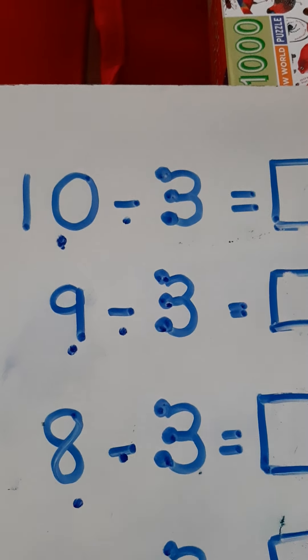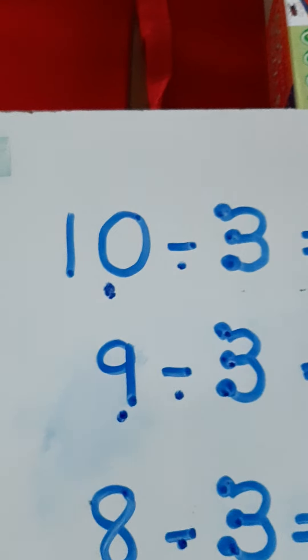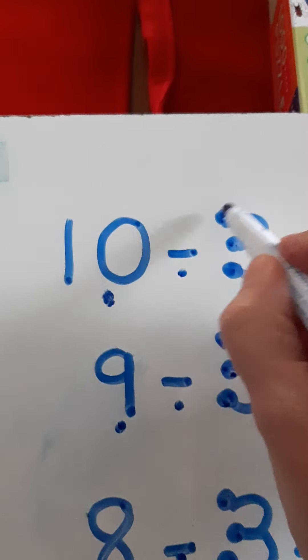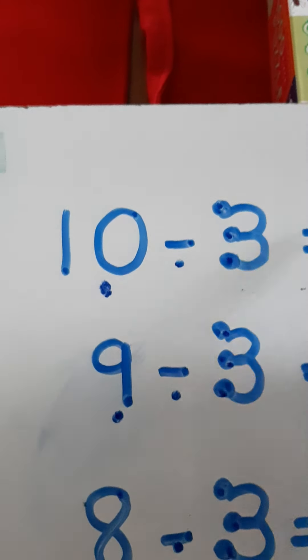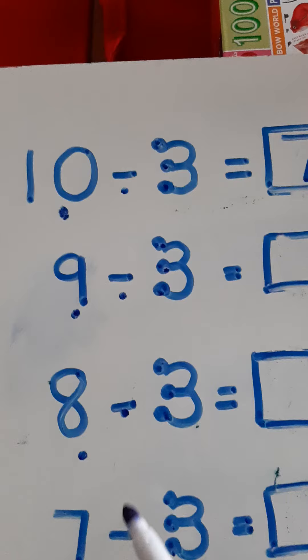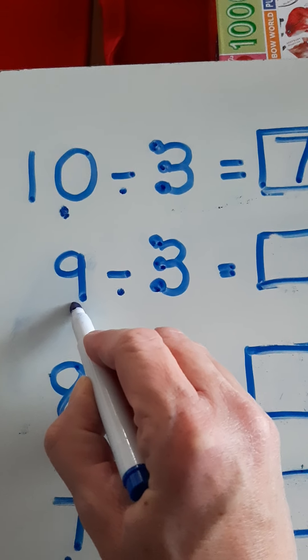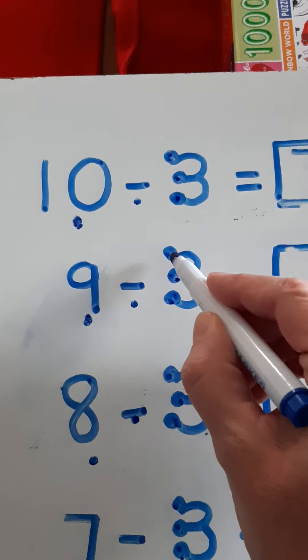So when you're taking away three in a subtraction question, you have to make sure that you're touching three three times. So when you would do a question like this, 10 take away 3 equals, we'll figure out the answer. You tap 10, tap your head and say 10, and then count backwards. That's why we were practicing counting backwards on three.